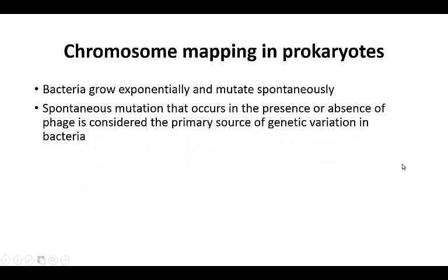Next we're going to talk about chromosome mapping in prokaryotes. One of the benefits of using prokaryotes for experiments like this is that they grow very quickly — they grow exponentially. Another benefit is that they do have some genetic variation, which they get primarily through mutations. These mutations are going to be spontaneous, occurring in the presence or absence of phage — basically a virus that infects the bacteria. This is considered the primary source of genetic variation in these bacteria. They don't have things like meiosis for reshuffling, but they do have many other ways to get genetic variation.